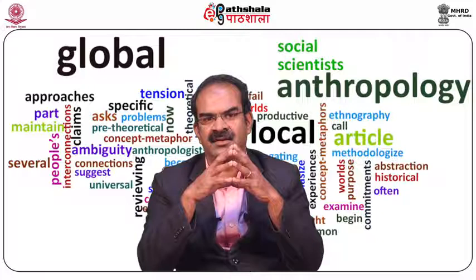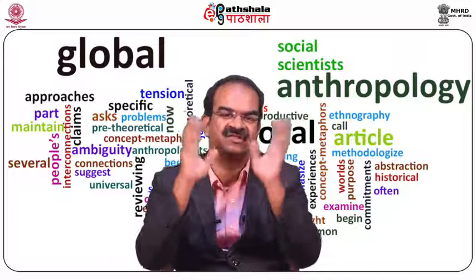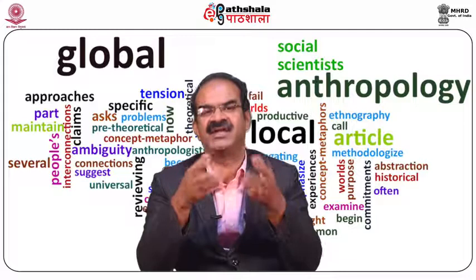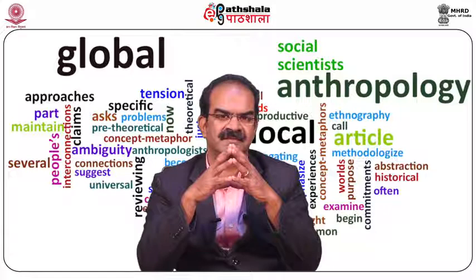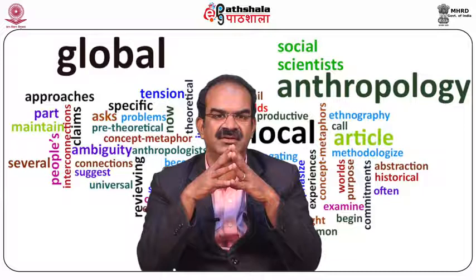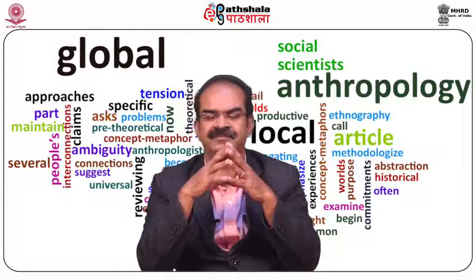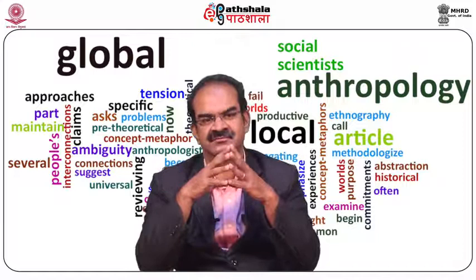Bourdieu's important concept is called Doxa. Doxa is, for him, the experience of the social and natural world as it appears to oneself. It could be values, beliefs, or attitudes in a given society, but people accept them as they are — a set of values of right and wrong, good and bad. We bring these into the habitus. This Doxa influences the habitus at some times.